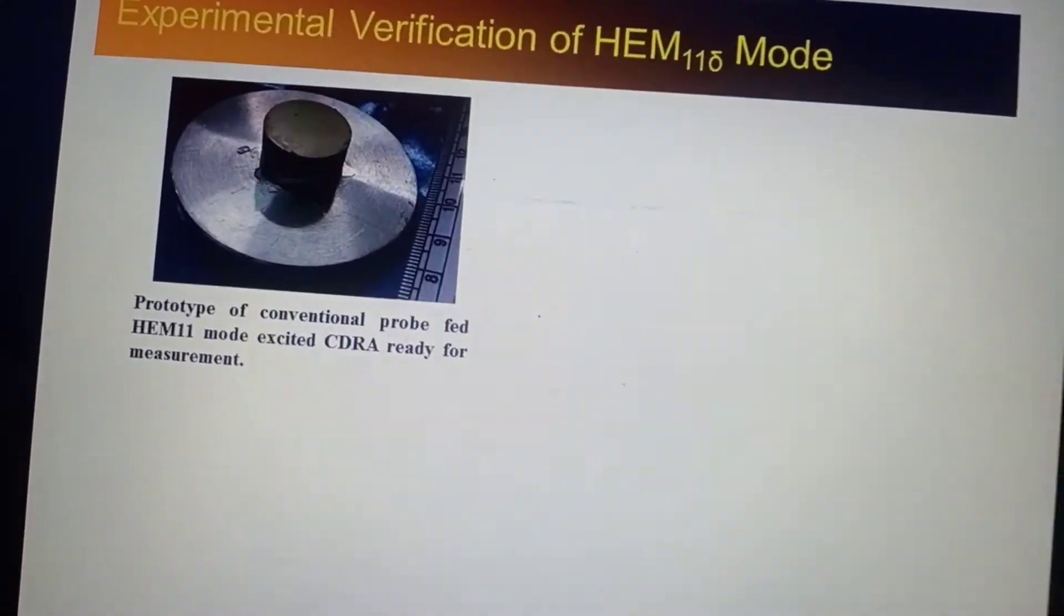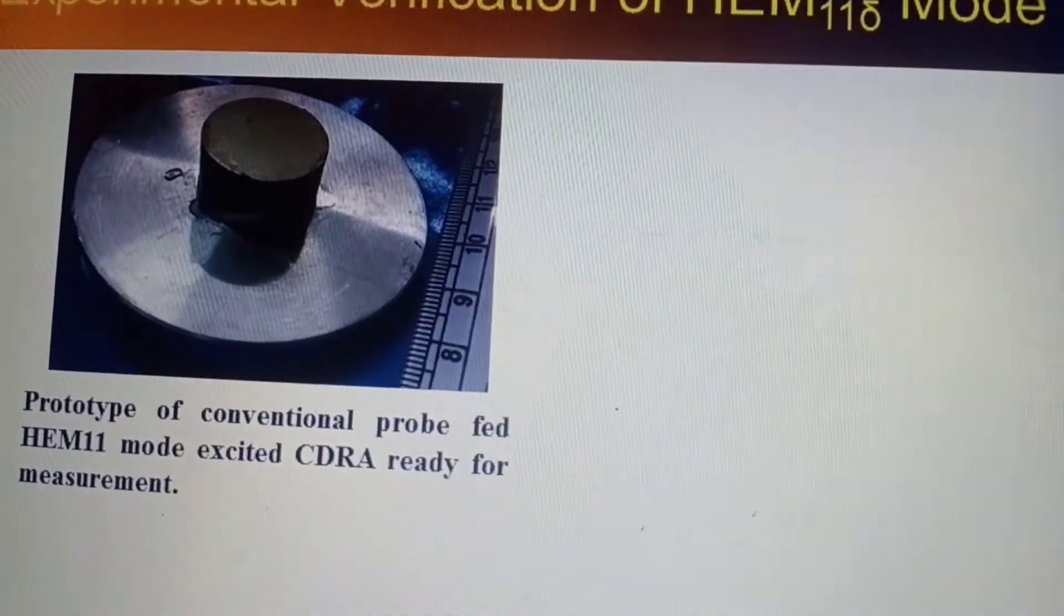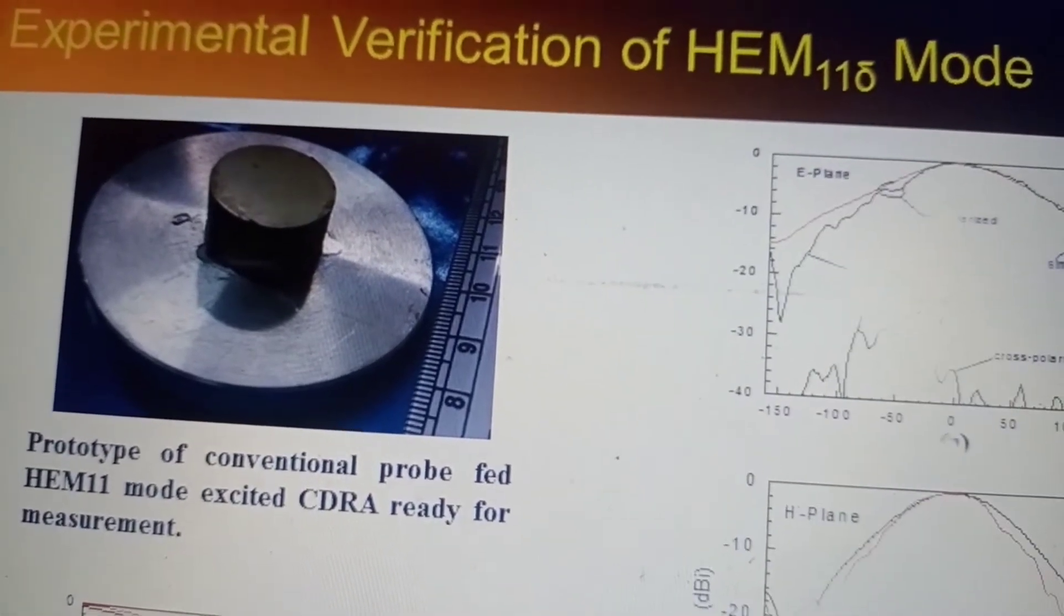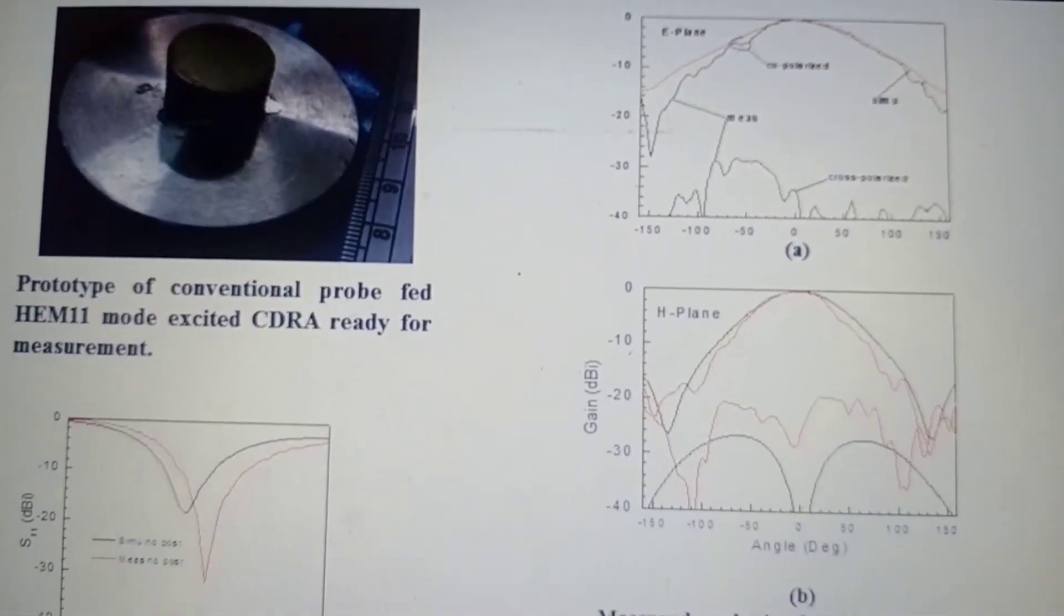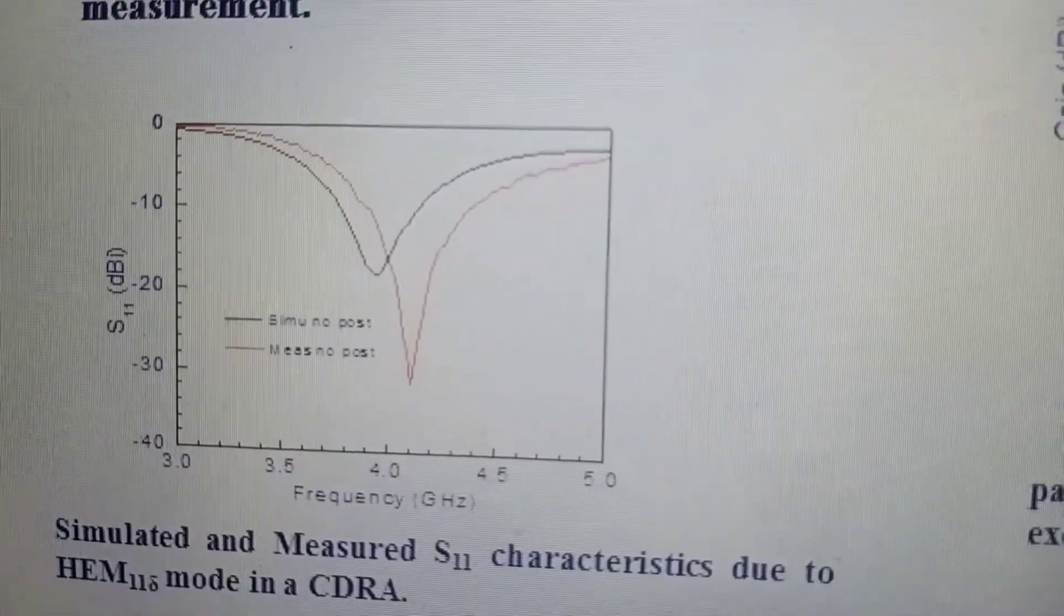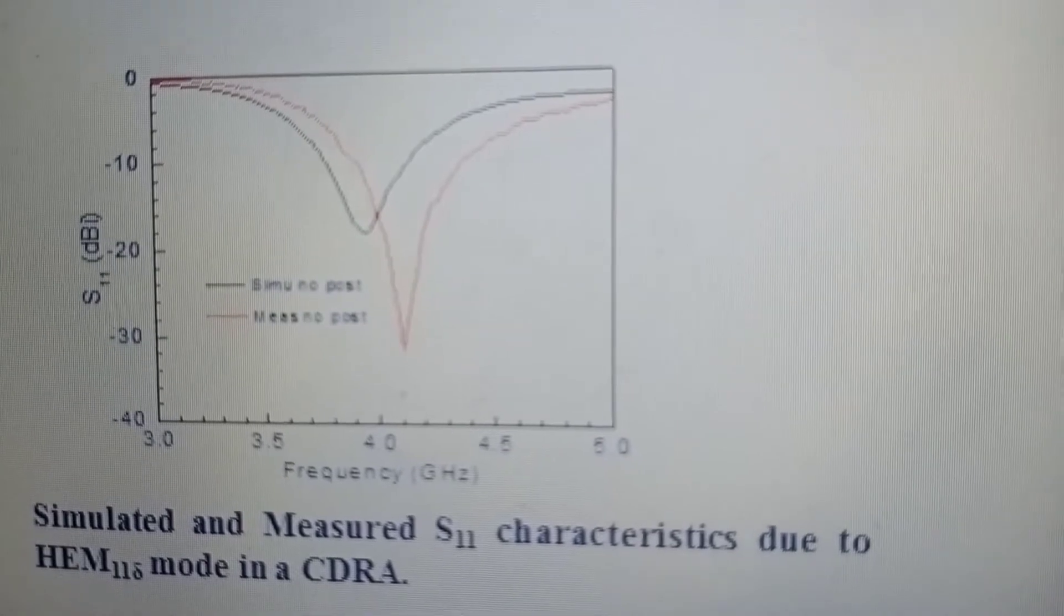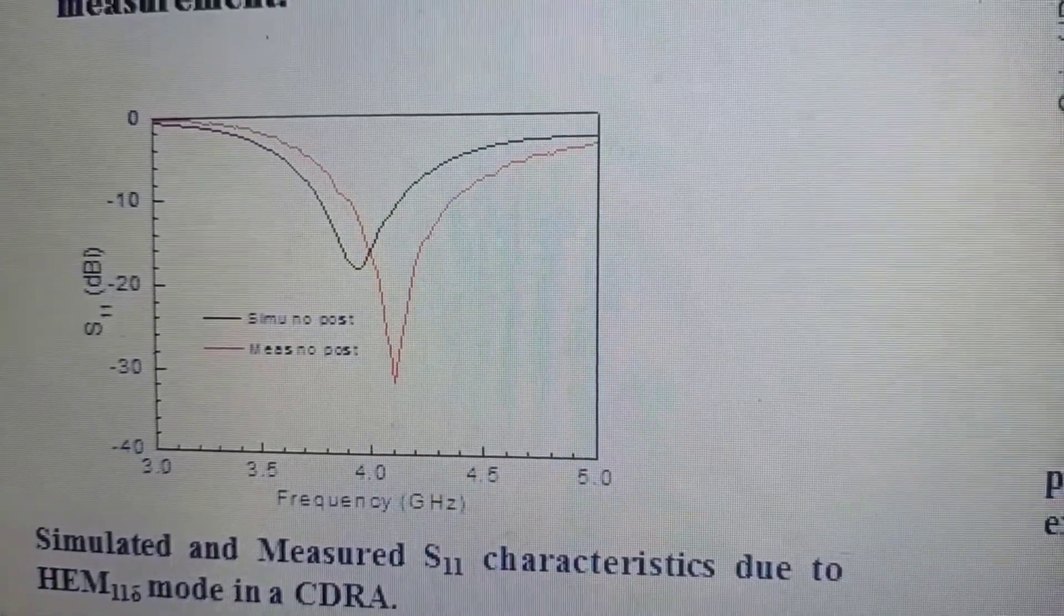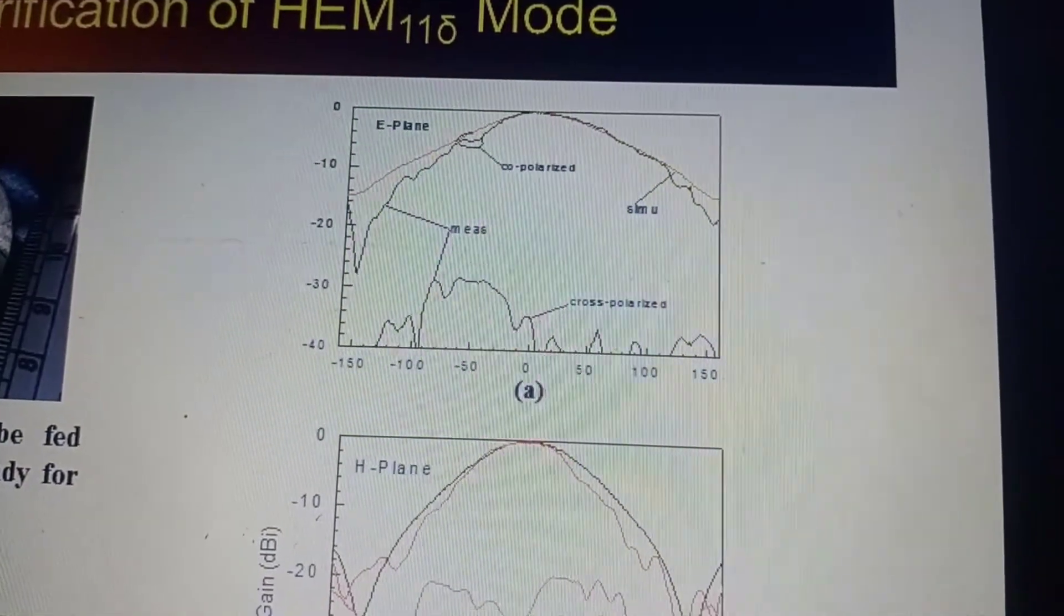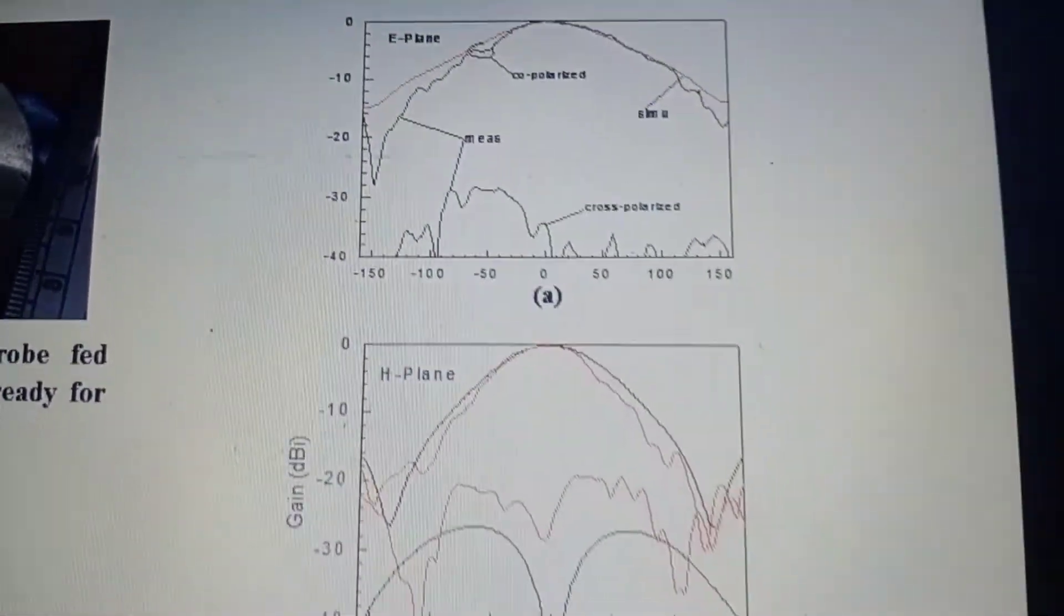Finally, we have implemented the prototype. This is the DRA, and practically experimental results are validated with the simulation. Little bit there is some deviation towards the higher side. And these are all the radiations in E plane and H plane. I think it's good.